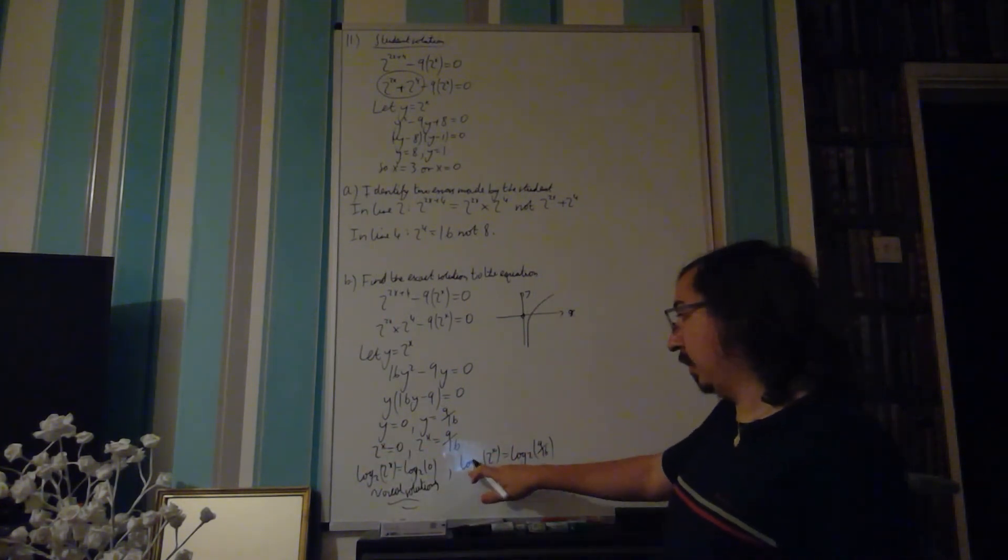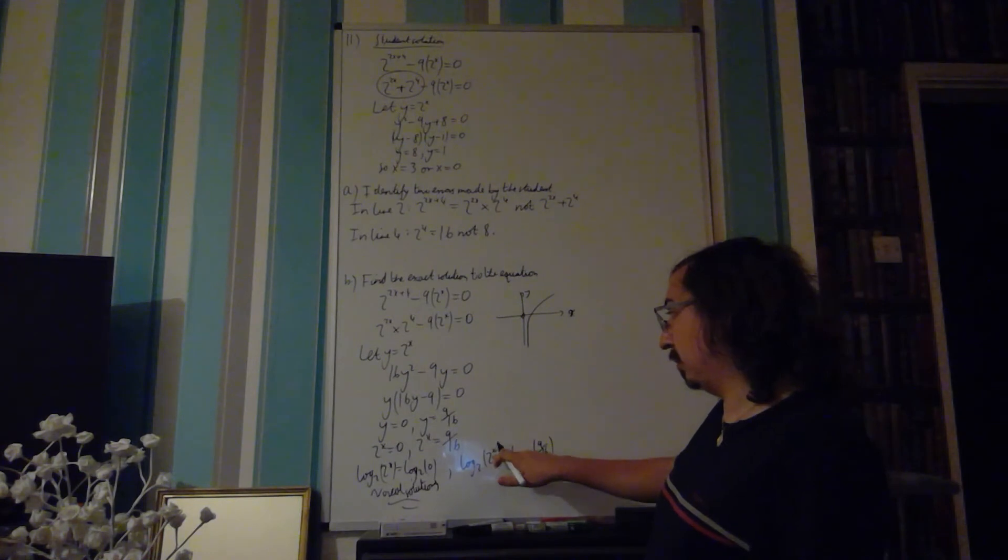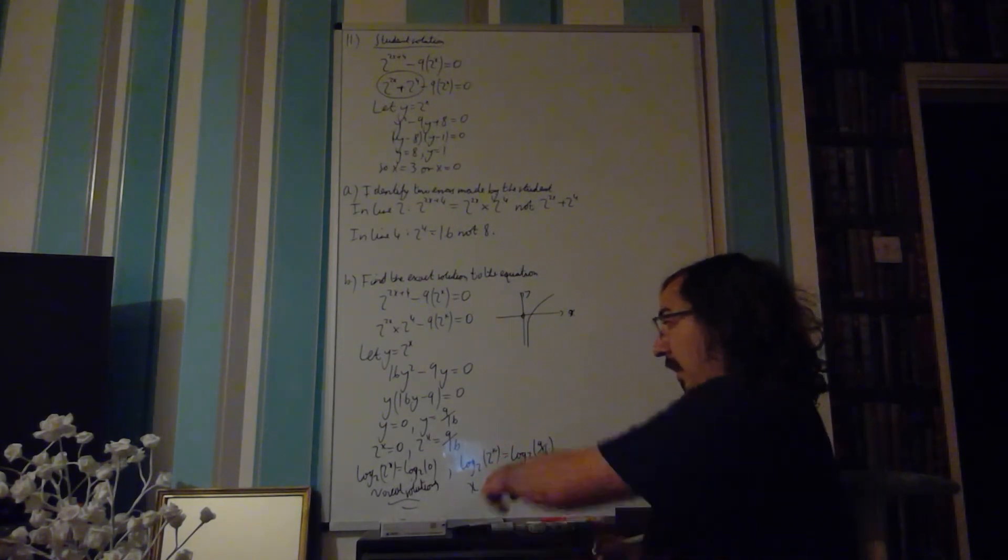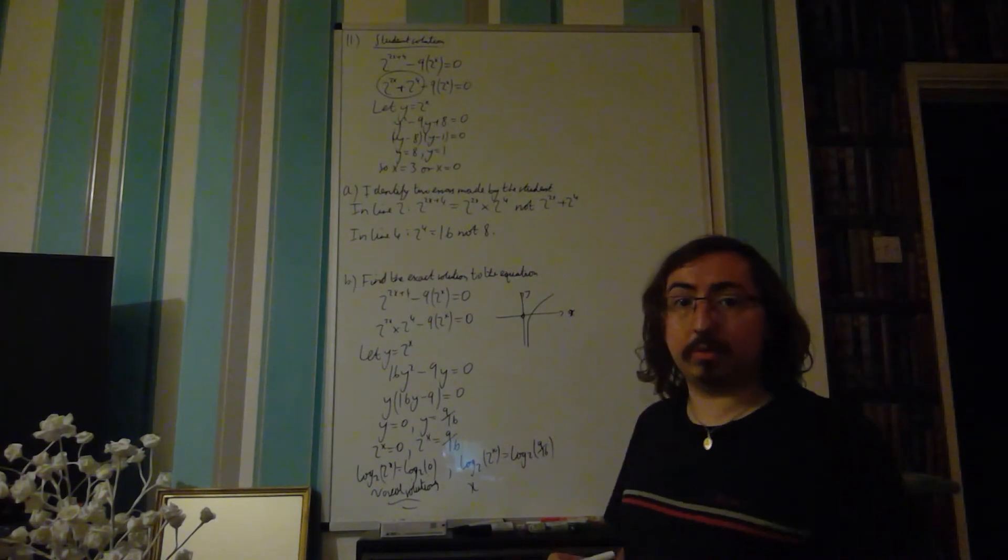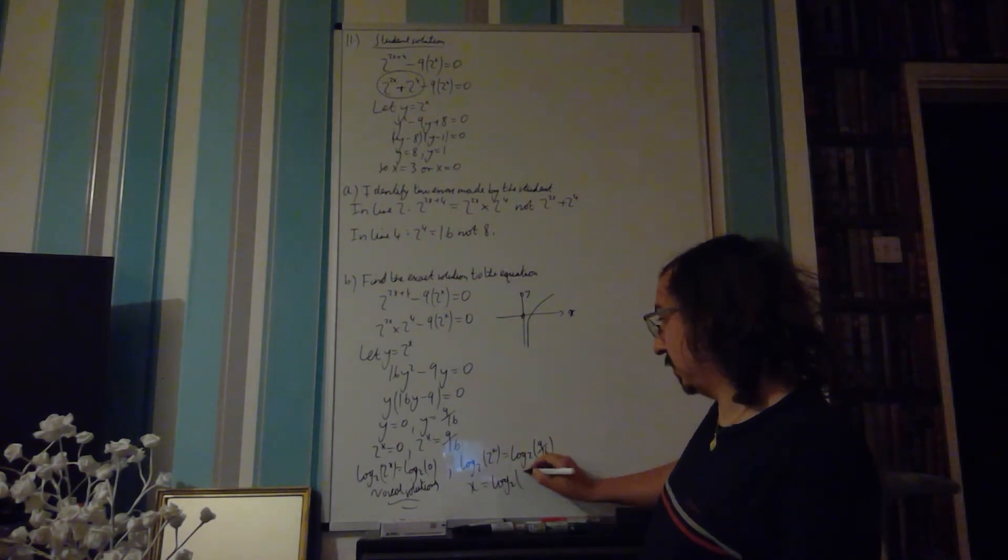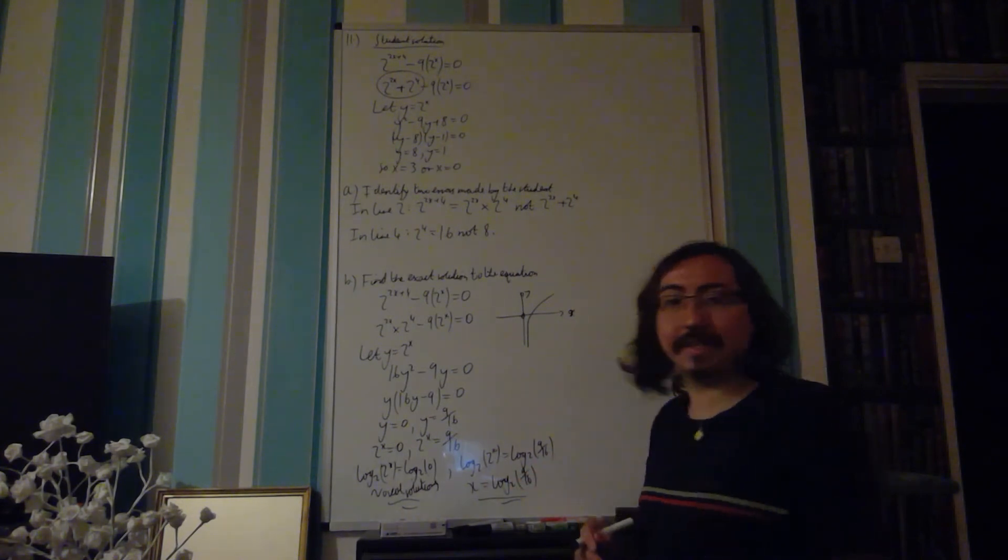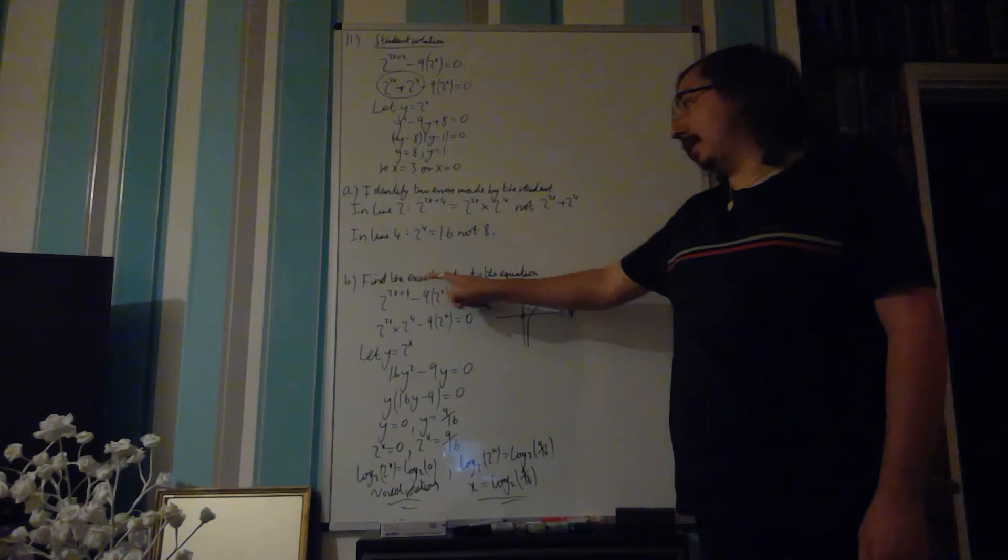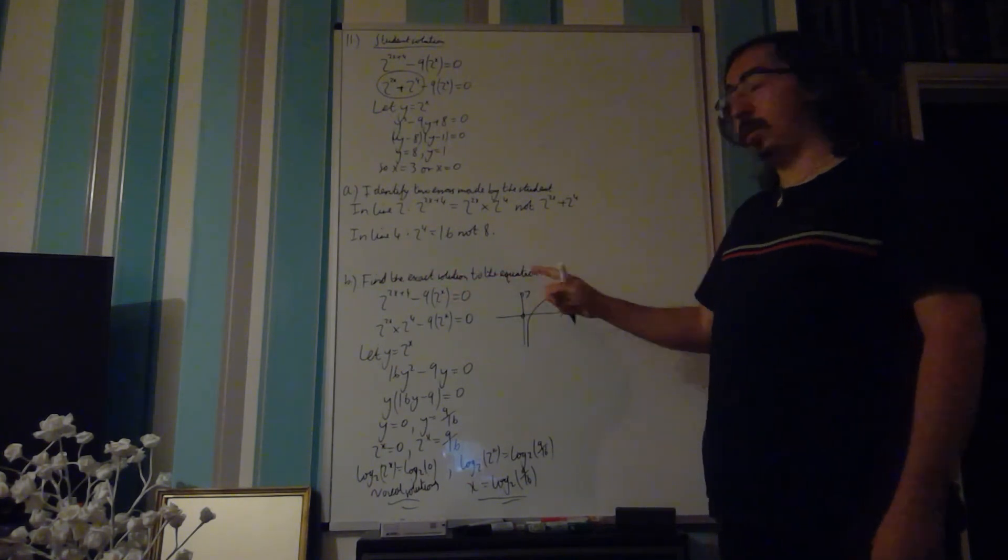This one, however, log 2 to the 2, well, we can bring the x to the front as a multiplier, and the log 2 to the 2 just goes to 1. So that cancels away, which leaves us with x is equal to log to base 2 of 9 over 16. And that is an exact solution to the equation.